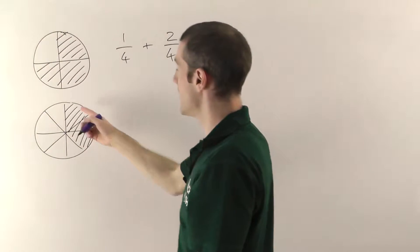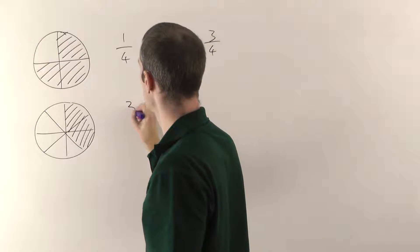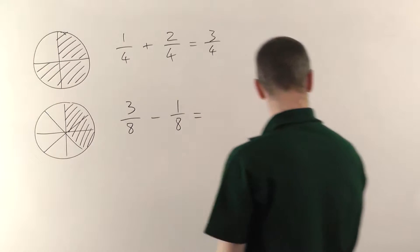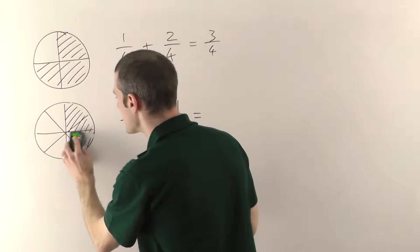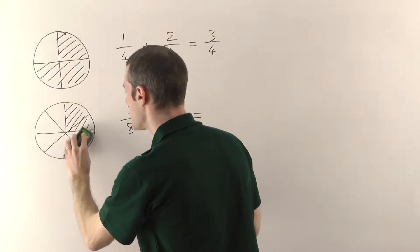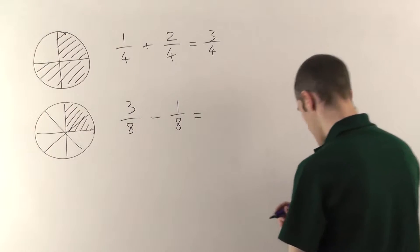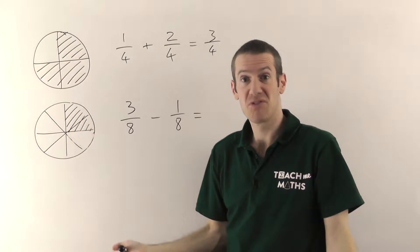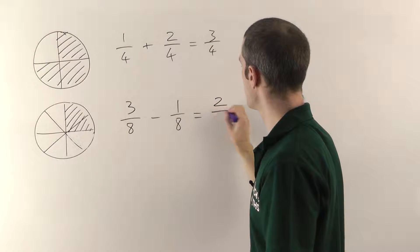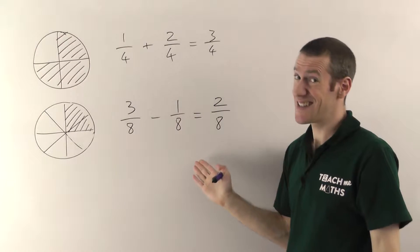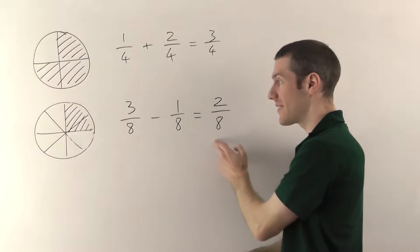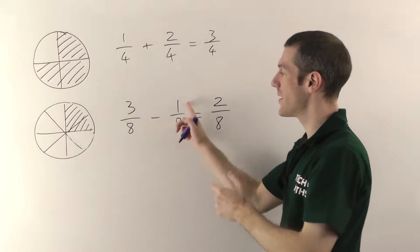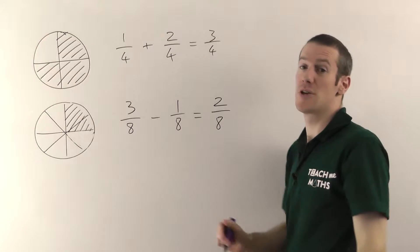Let me show you quickly with subtraction. If we start with three eighths and take away one eighth — I'll rub out this little bit here — that's one eighth gone. Three eighths minus one eighth just leaves you with two eighths. The number on the bottom never changes. You just subtract the tops. Three of these things minus one of these things leaves you with two of these things.